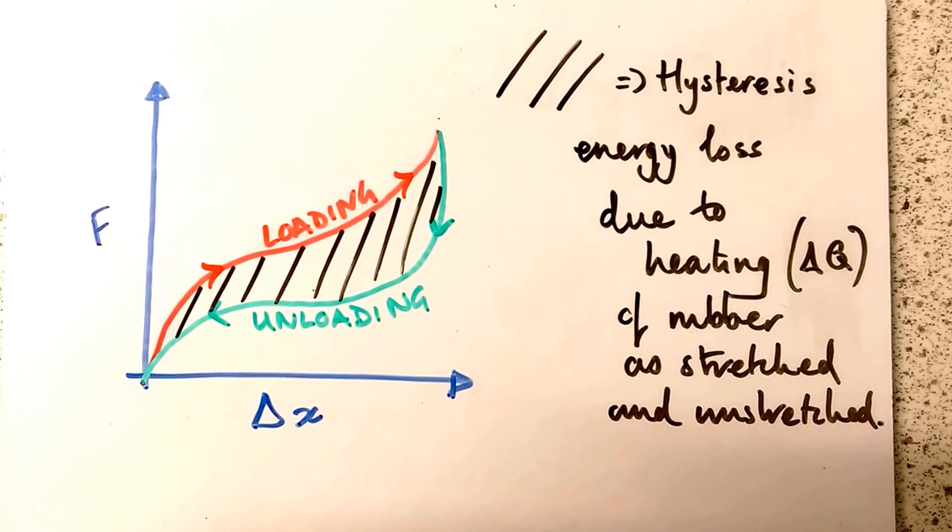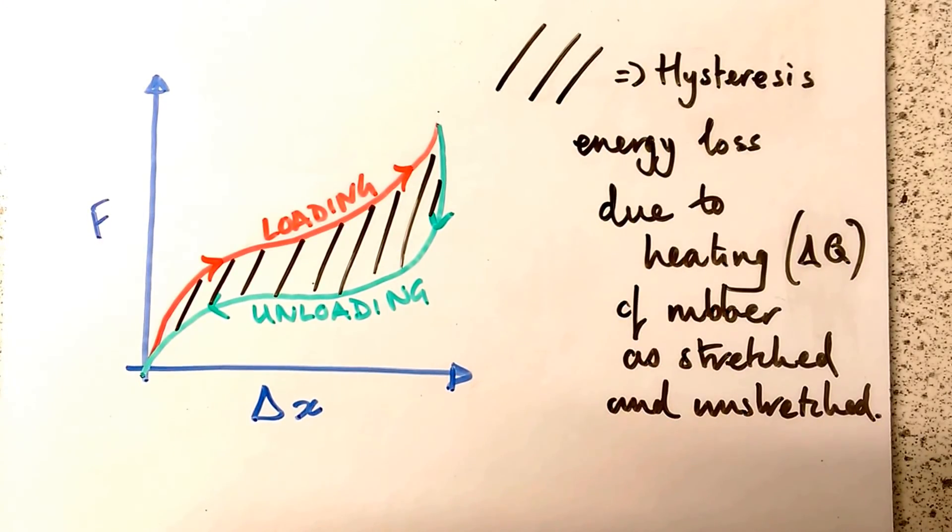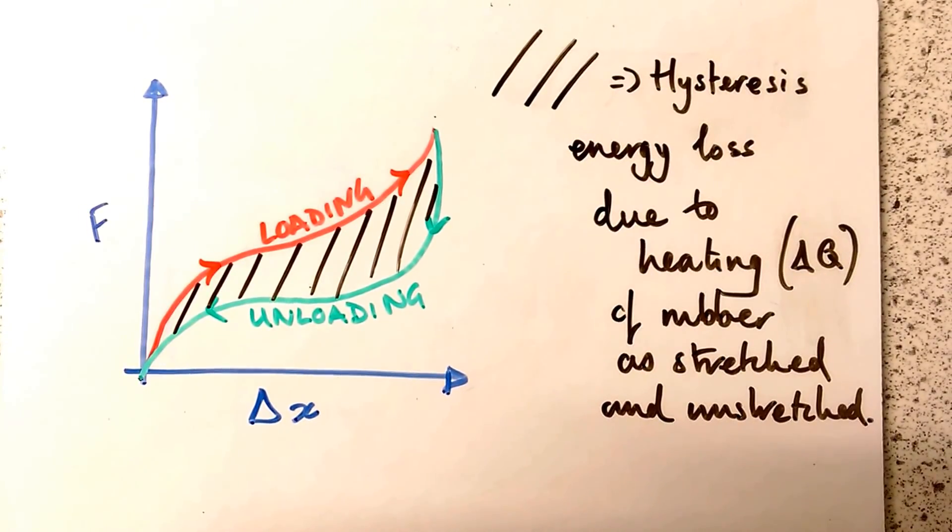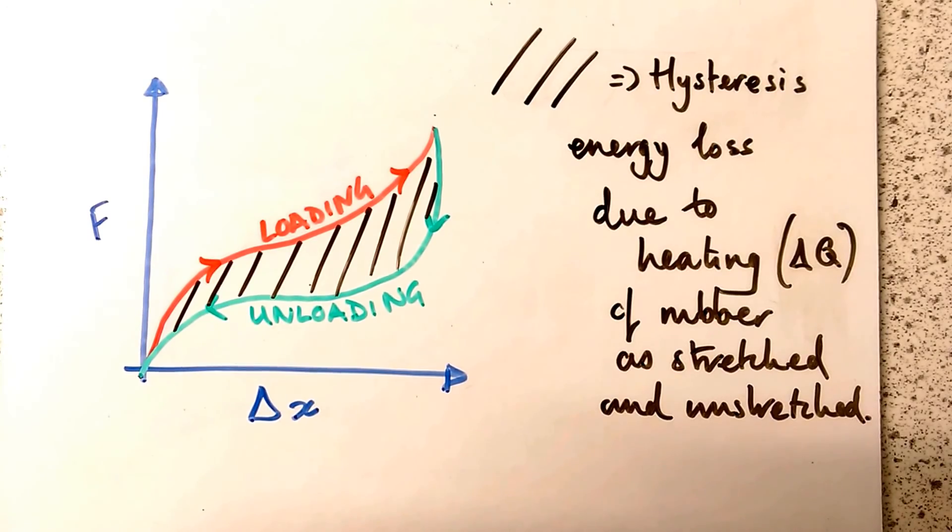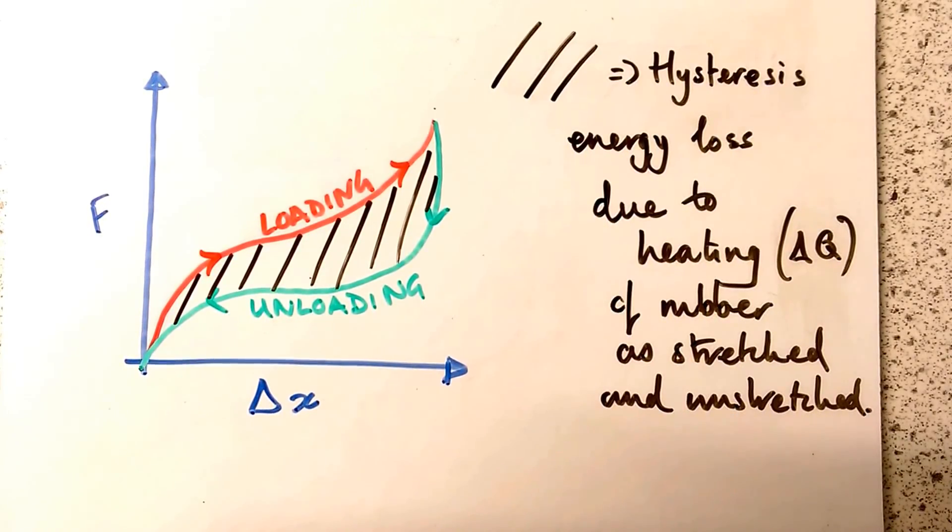That means some energy has gone missing somewhere. And as we know, we can't just get rid of energy. Energy is not created or destroyed - First Law of Thermodynamics. That energy goes towards something else. That hysteresis is energy loss due to heating, ΔQ, of the rubber as it's stretched and unstretched.